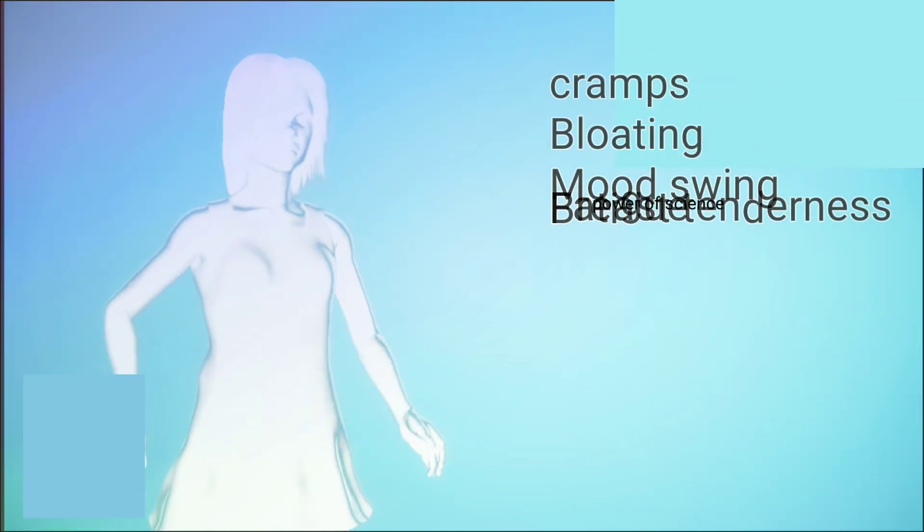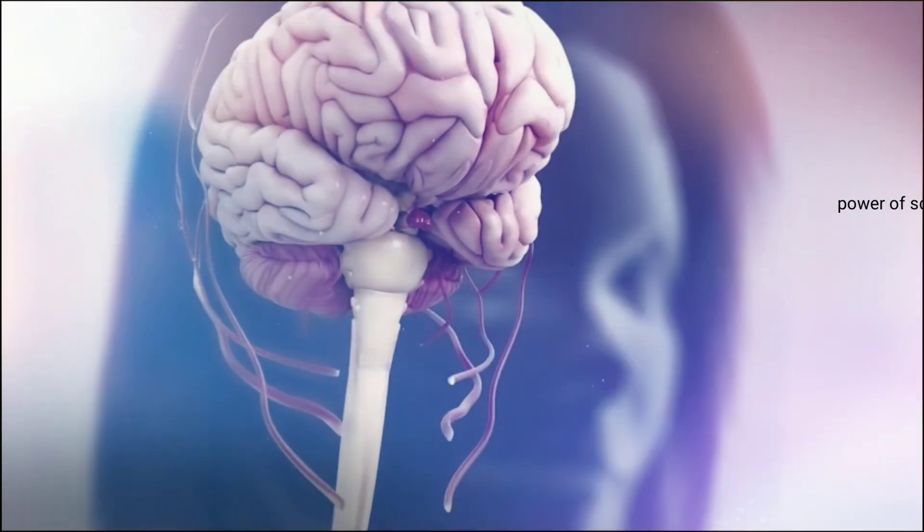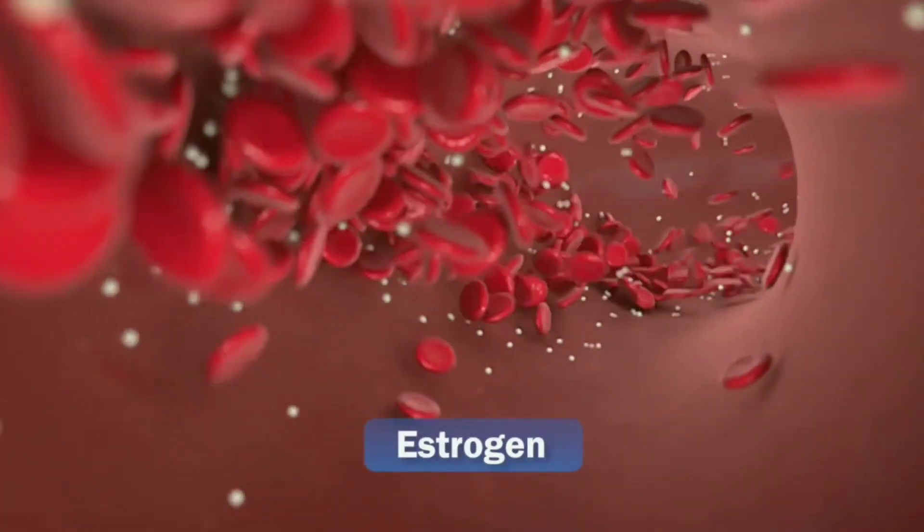Common symptoms during the menstrual cycle can include cramps, bloating, mood swings, breast tenderness, and fatigue. These symptoms are mainly caused by hormonal fluctuations, particularly estrogen and progesterone.